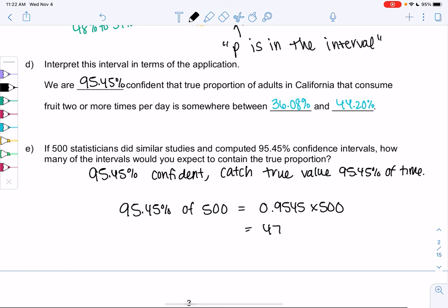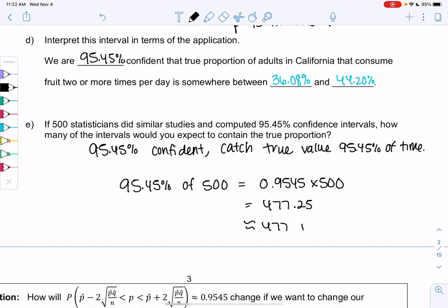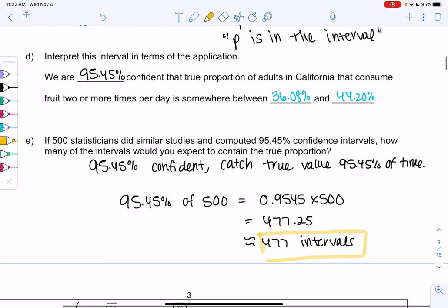If 500 people do this, that means 95.45% of the 500 will catch the true value. So for percents, we go 0.9545 times 500. We get 477.25. So we'll round that down to 477 intervals. So most of them, but not all of them. And again, that has to do with the fact that stats is what's most likely. Stats is never proving the absolute truth.